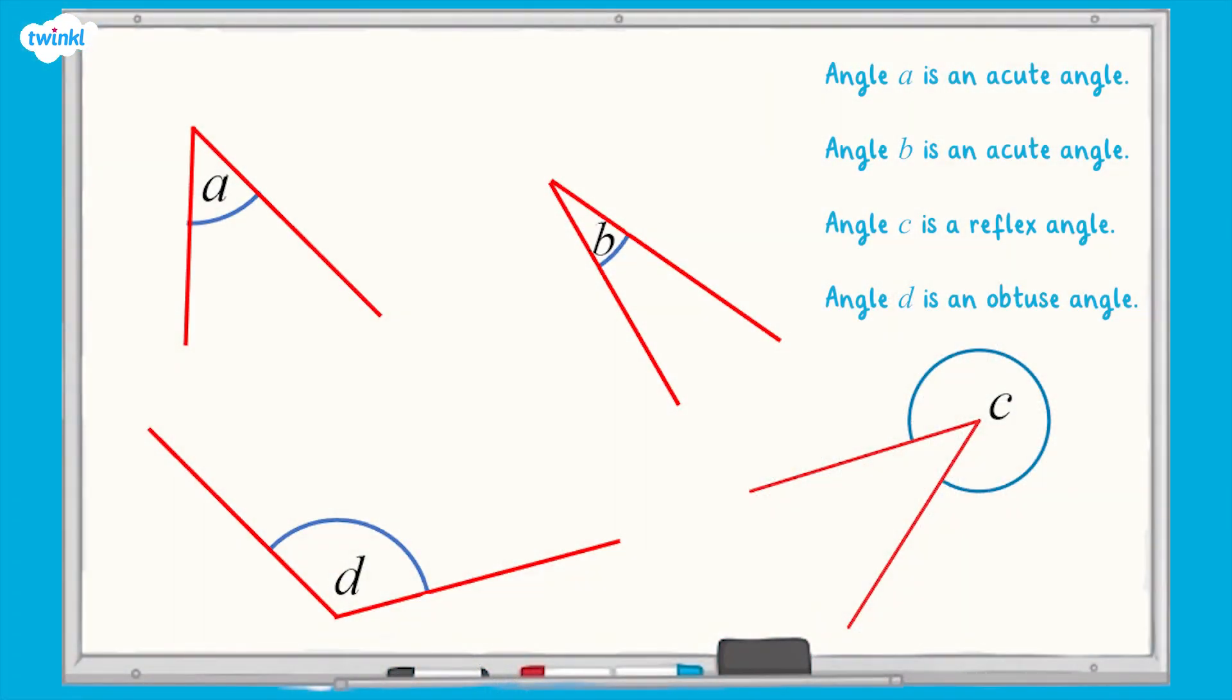All finished? Well done. Let's take a look at the answers. Angle A is an acute angle. Angle B is an acute angle. Angle C is a reflex angle. Angle D is an obtuse angle.